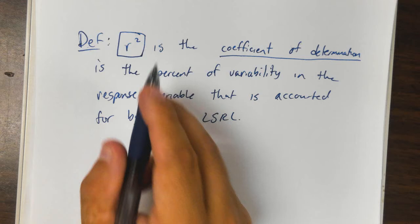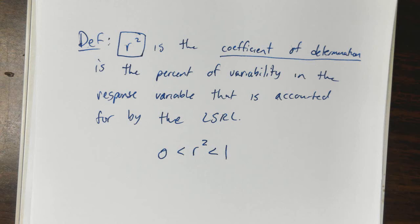Just to note, R squared is always between 0 and 1, it's always positive, and it's a percentage.